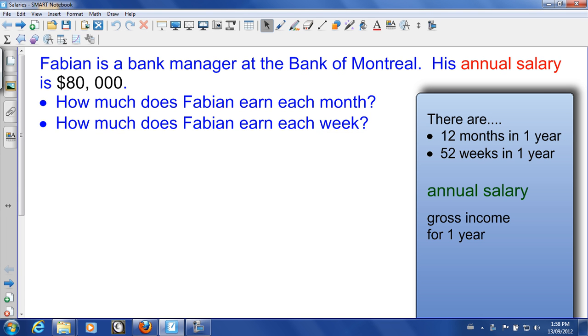Fabian is a bank manager at the Bank of Montreal. His annual salary is $80,000. How much does Fabian earn each month? How much does Fabian earn each week?